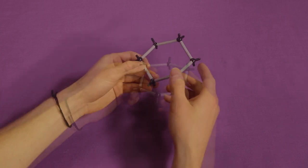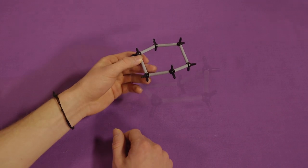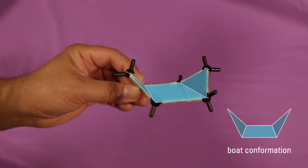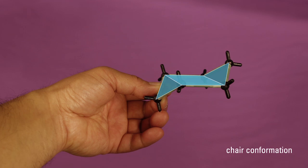We will be building the chair conformation of cyclohexane. There are other conformations, such as the boat conformation, but the chair conformation is the most stable because it induces the least strain on the bonds. It is named a chair conformation because it looks like a lounge chair with a back and foot rest.